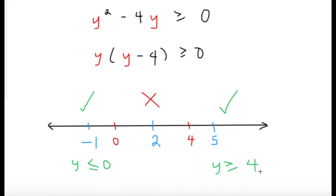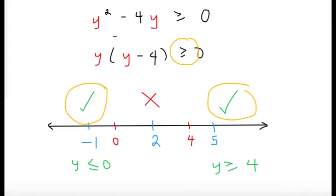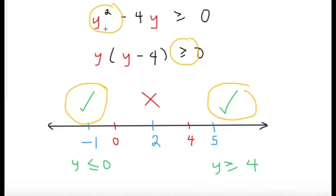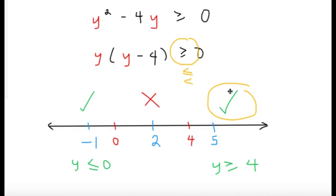Here's a nice technique when solving quadratic inequalities: if the sign is greater than or greater than or equal to, it is guaranteed that the outside regions — to the left and to the right — are the two regions that work, provided that the coefficient of the squared term is positive (in this case it's 1). On the other hand, if it was less than or less than or equal to, then the region in the middle would be the solution.